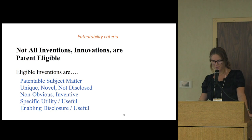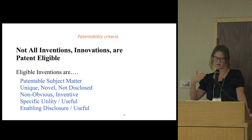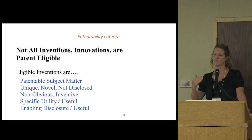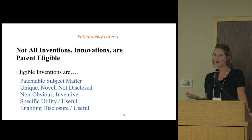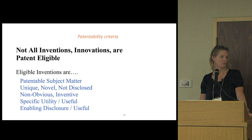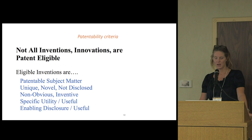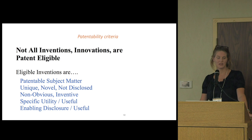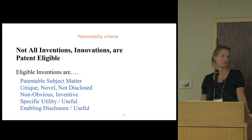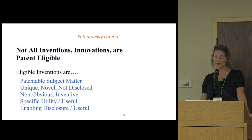Not all inventions and innovations are patent eligible — they have to meet certain criteria. I've put them in the order I would think about them: first, patentable subject matter; second, it needs to be unique and novel, which basically means it's not disclosed anywhere publicly; third, non-obvious or inventive; fourth, you need a specific utility for your invention — you can't just claim a new compound without credible evidence of its usefulness; and fifth, very critically, you need an enabling disclosure — you need to teach people how to practice the invention.